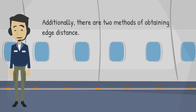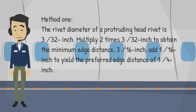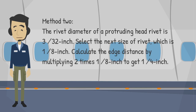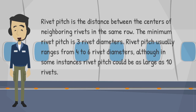There are two methods of obtaining edge distance. Method 1: the rivet diameter of a protruding head rivet is 3/32 inch. Multiply 2 times 3/32 inch to obtain the minimum edge distance of 3/16 inch, then add 1/16 inch to yield the preferred edge distance of 1/4 inch. Method 2: the rivet diameter of a protruding head rivet is 3/32 inch. Select the next size of rivet, which is 1/8 inch, and calculate the edge distance by multiplying 2 times 1/8 inch to get 1/4 inch.